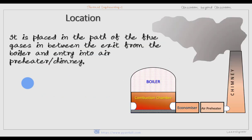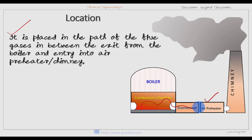Now, the question is: what should be the location or position of the economizer? It is placed in the path of the flue gases, in between the exit from the boiler and the entry to the air preheater. If an air preheater is used, the economizer is placed before the air preheater. If there is no air preheater, then the economizer is positioned between the chimney and the exit of the combustion chamber.